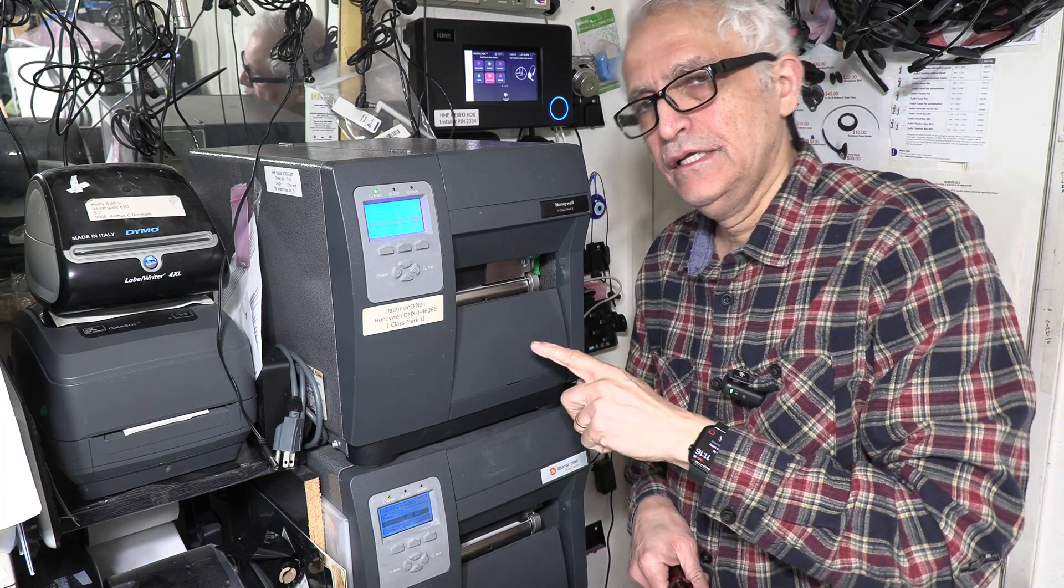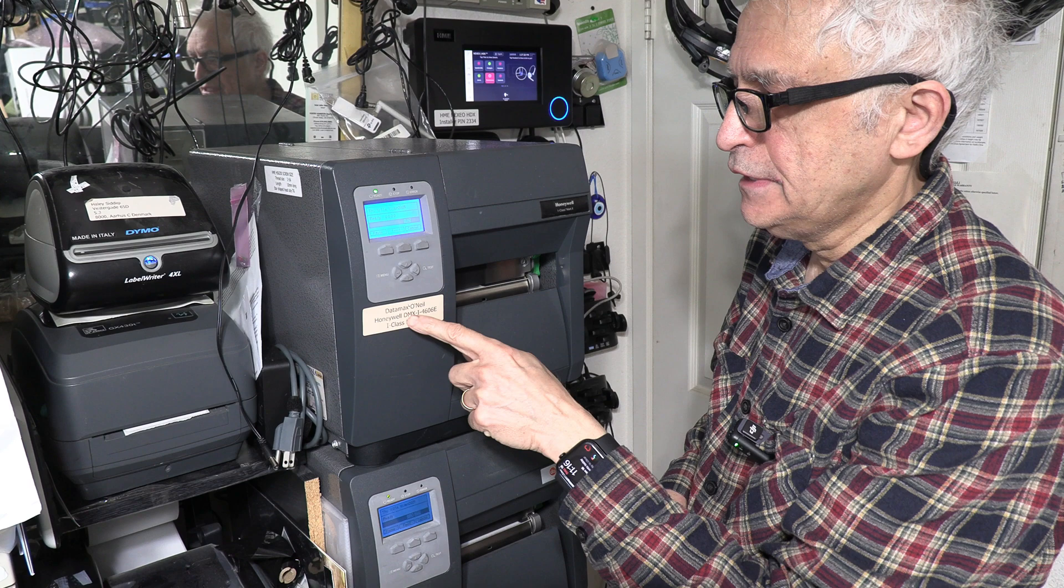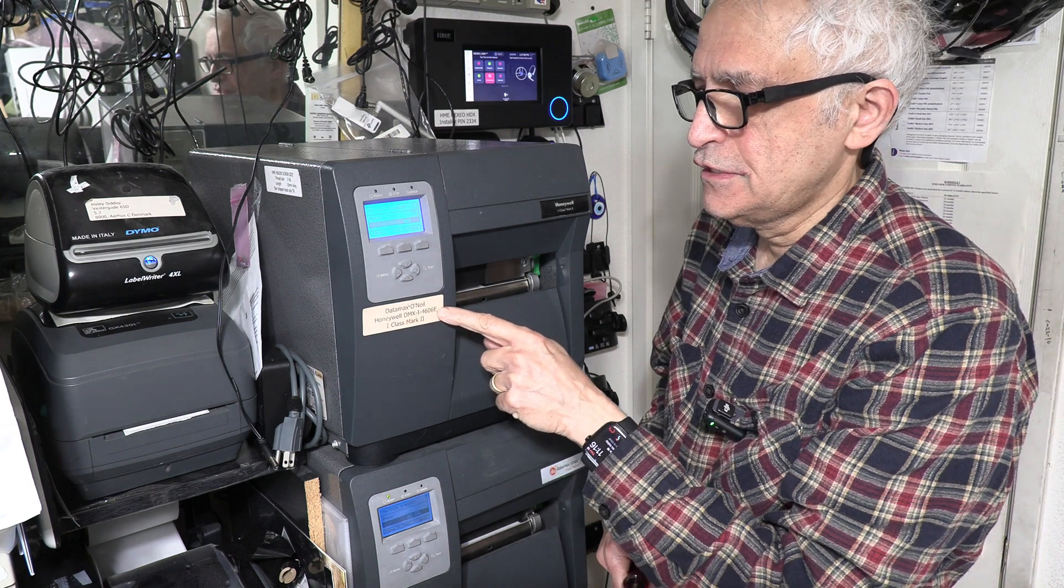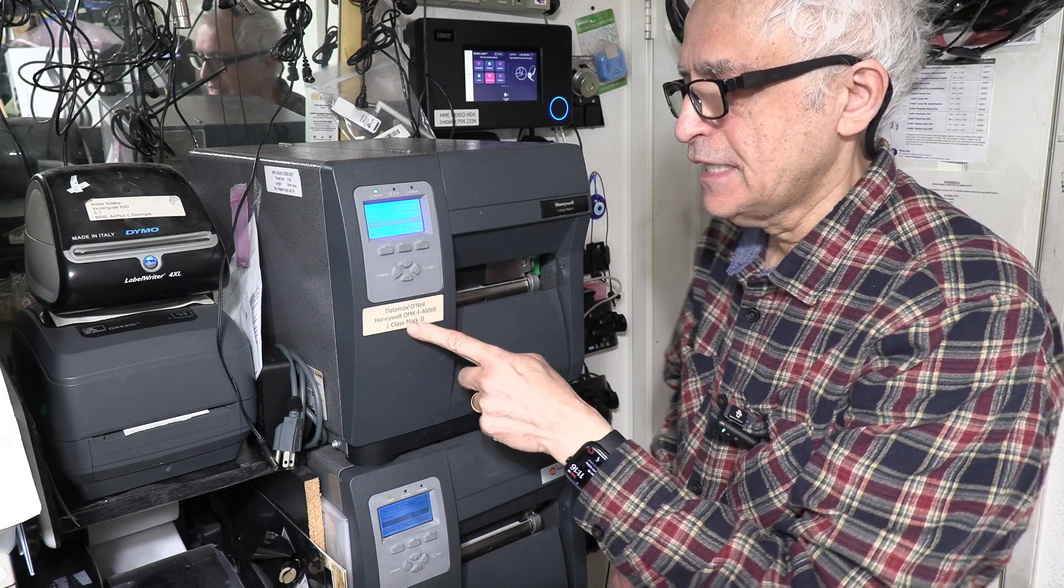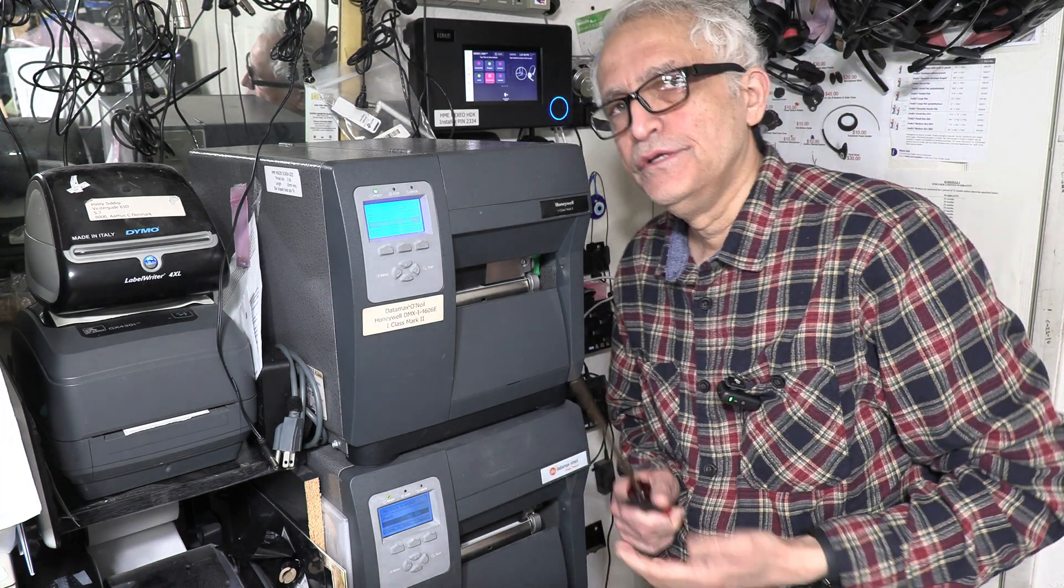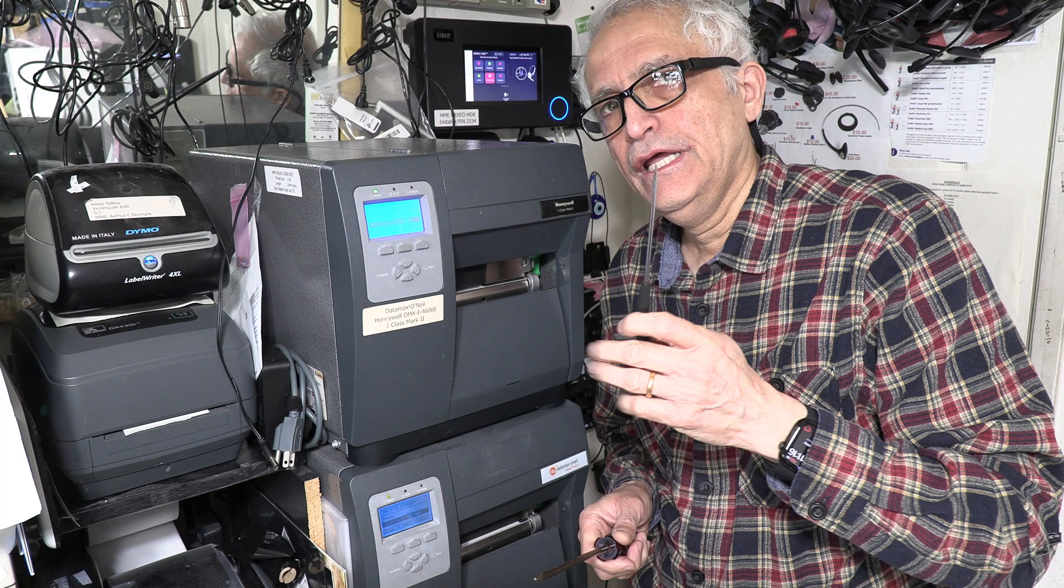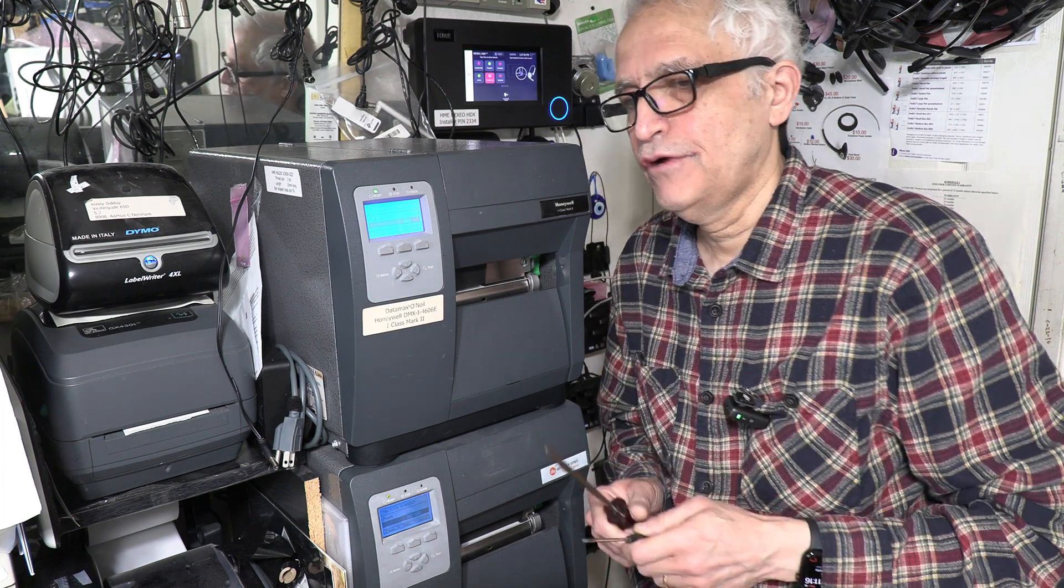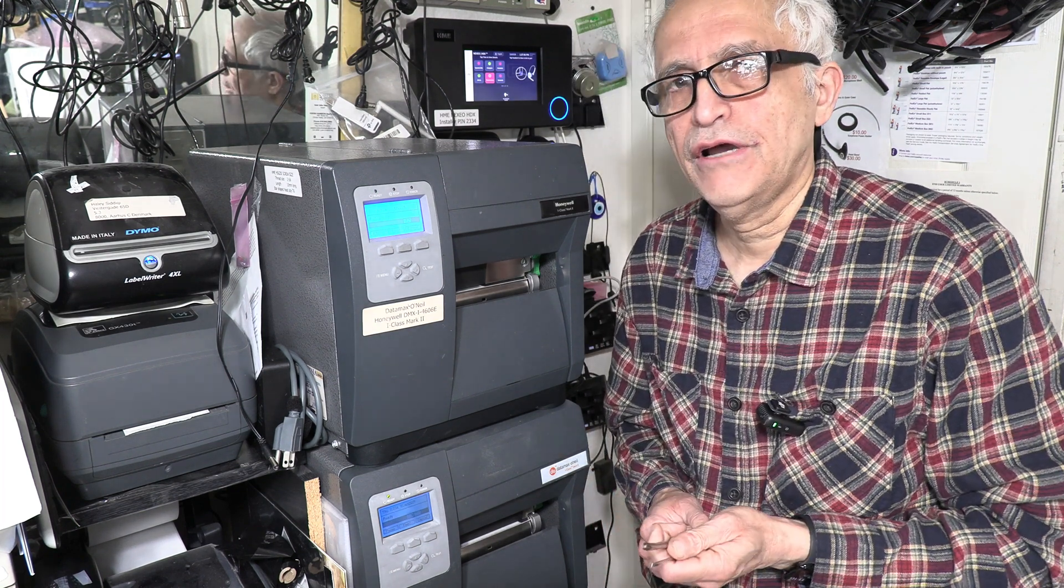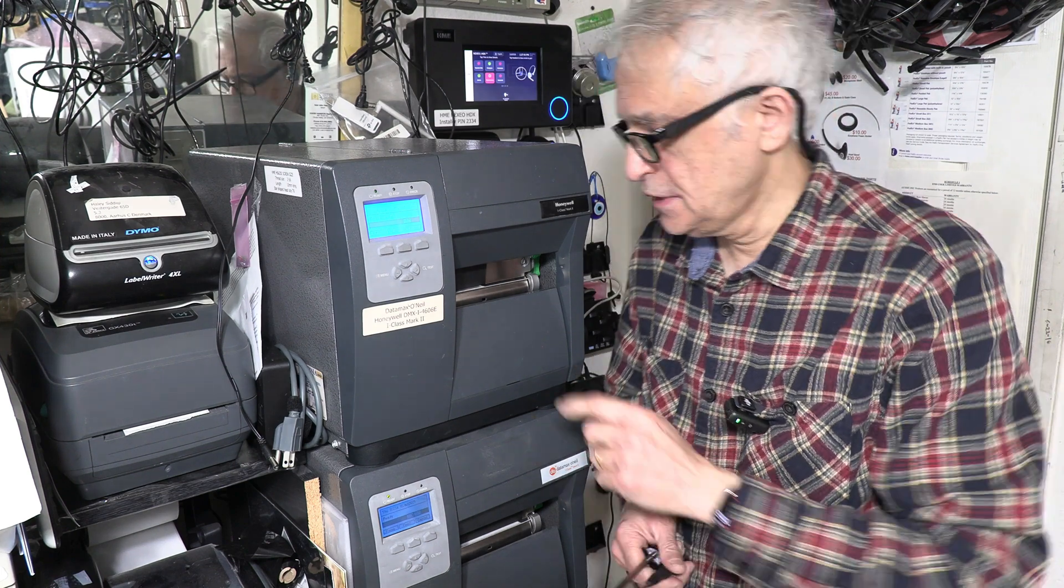Okay, so to replace the printhead in a Datamax O'Neill Honeywell DMX I4606E I-Class Mark II printer, you need to have a Phillips screwdriver and a flathead screwdriver, and obviously you need to have the brand new printhead.